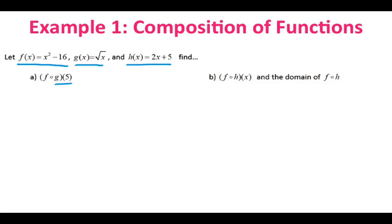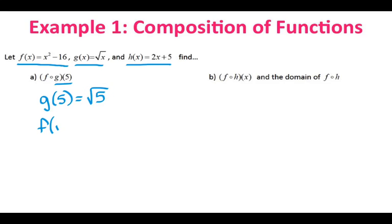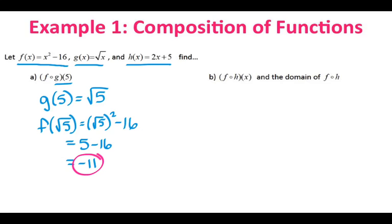We want to find g of 5 first. You always work with your rightmost function, so you work from right to left. So g of 5 is going to be the square root of 5. Then the square root of 5 becomes the input into your f function. So now we're finding f of the square root of 5. Our f function is x squared minus 16, so I have the square root of 5 quantity squared minus 16. Square root of 5 squared is 5 minus 16, which is negative 11. So f of g of 5 is equal to negative 11.